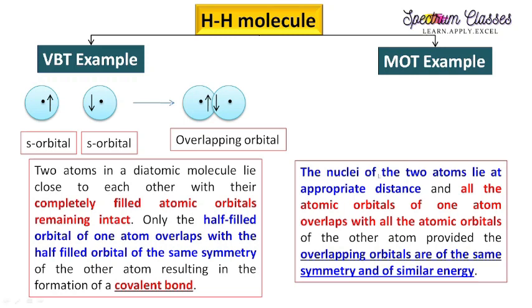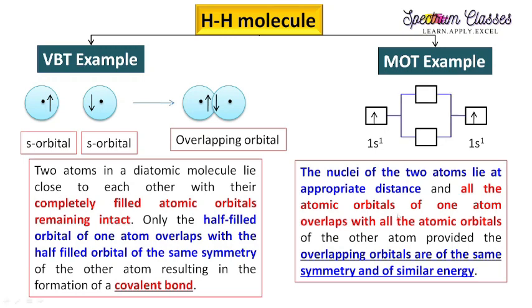In molecular orbital theory, the approach is different: the nuclei of two atoms lie at an appropriate distance, and all the atomic orbitals of one atom overlap with all the atomic orbitals of the other atom. These overlapping atomic orbitals then form molecular orbitals. The overlapping orbitals must be of the same symmetry and of almost similar energy to produce molecular orbitals effectively.